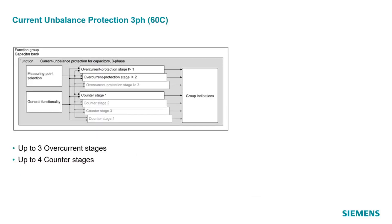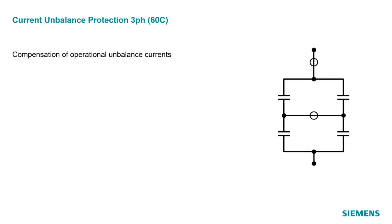The current unbalanced function has two types of stages. First, an overcurrent stage — a maximum of three stages are available of this type. Second, a stage for counting defective capacitor elements — up to four stages are available. Even without defective capacitor elements, the cap bank can show operational unbalanced currents. They can be caused by manufacturing tolerances, temperature changes, aging, and disturbed detection of defects. To overcome this problem, the function can work with compensated currents.